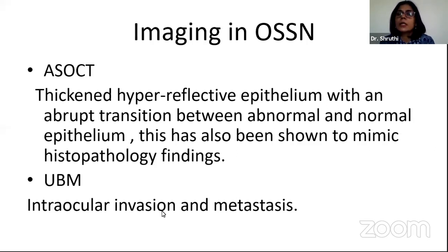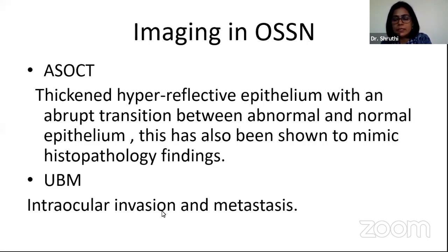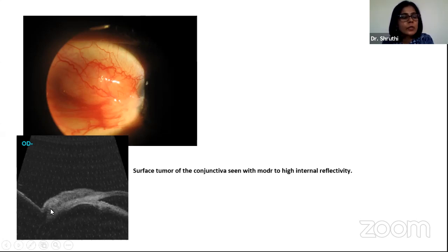Regarding the role of imaging in OSSN patients: ASOCT has a role — it shows a thickened hyperreflective epithelium with an abrupt transition between normal and abnormal epithelium, which correlates with histopathological findings. In a nodular variety patient, you can see an abrupt transition with internal reflectivity, and posteriorly there may be some amount of scleral invasion.